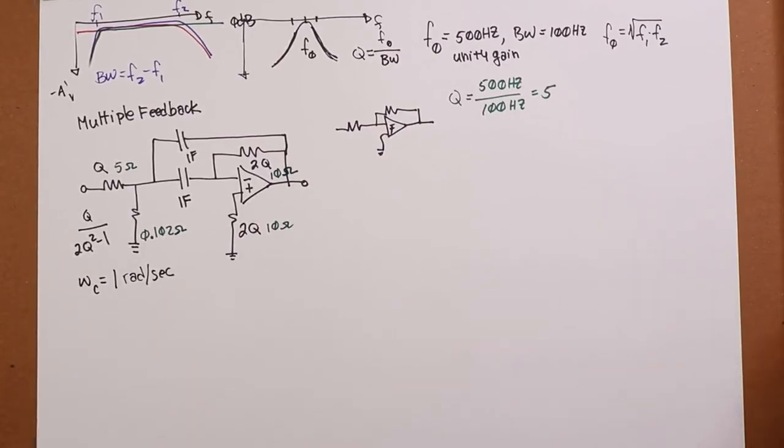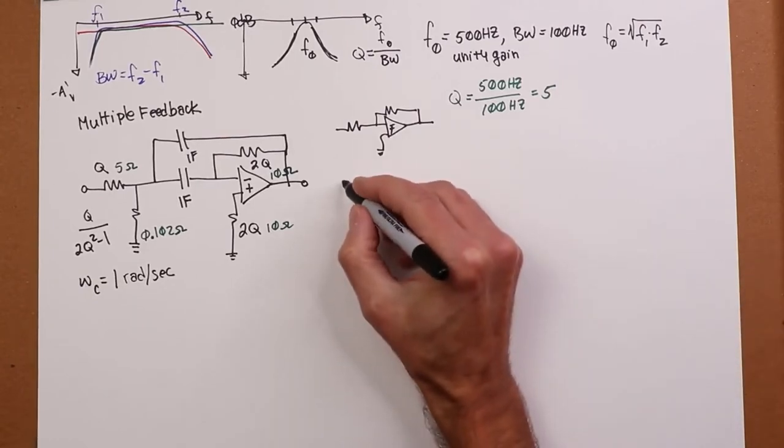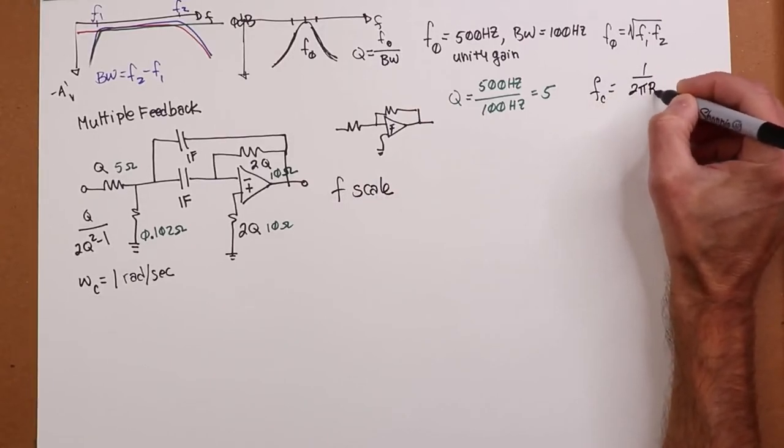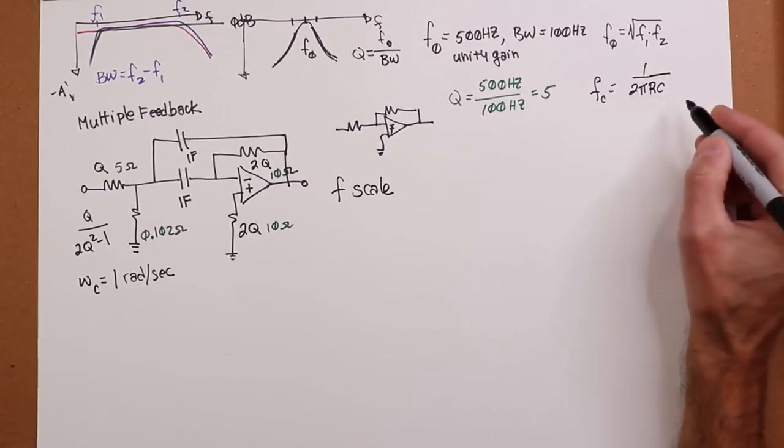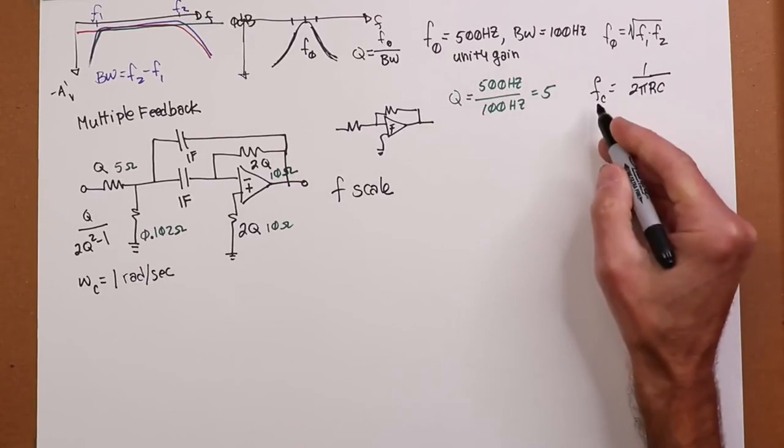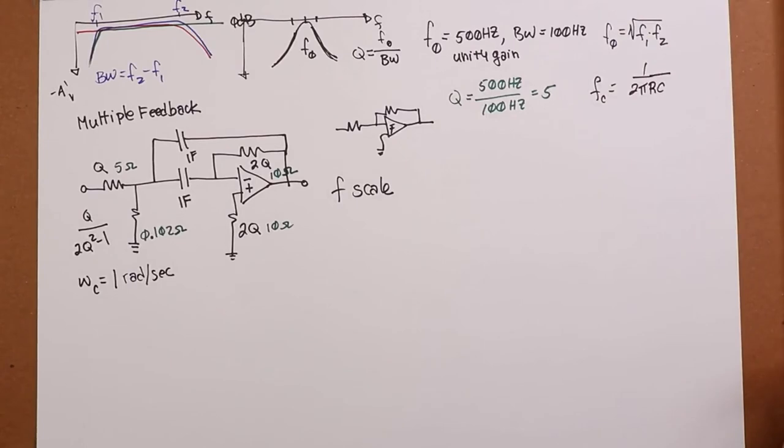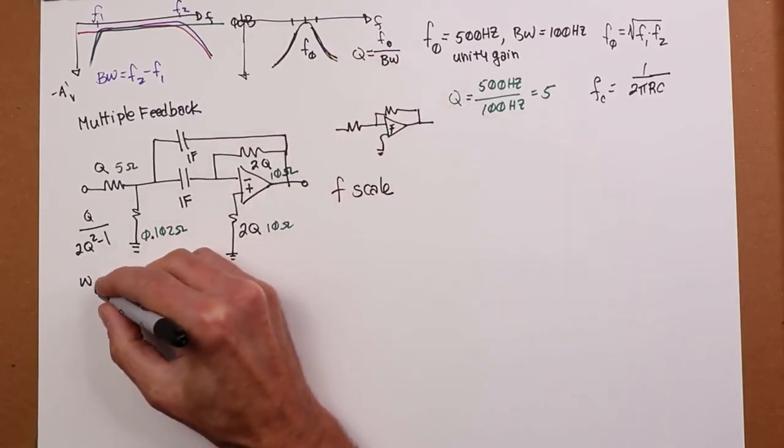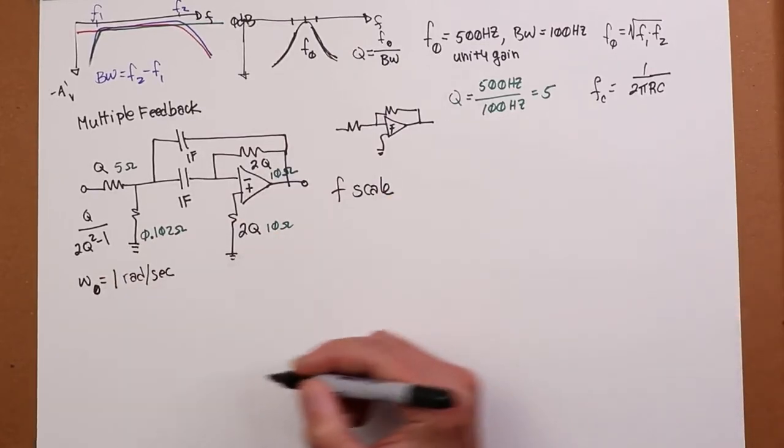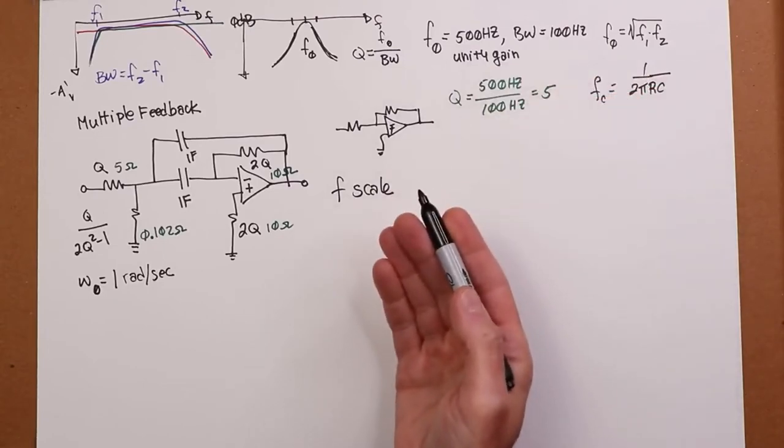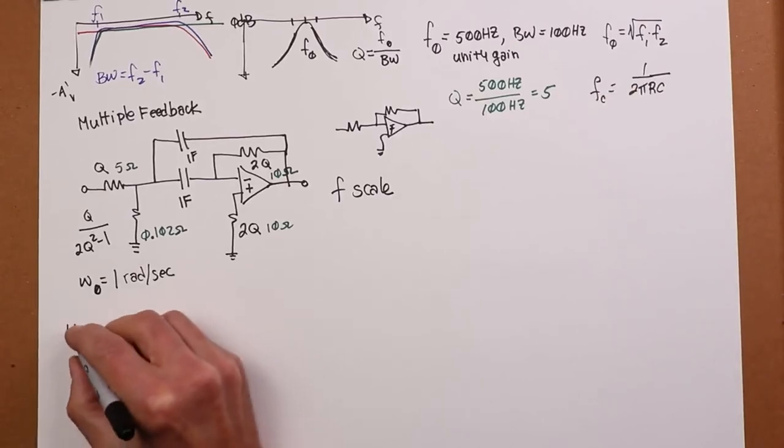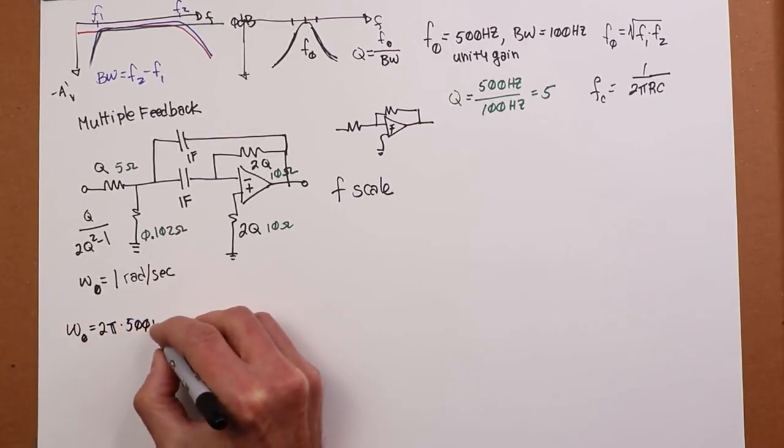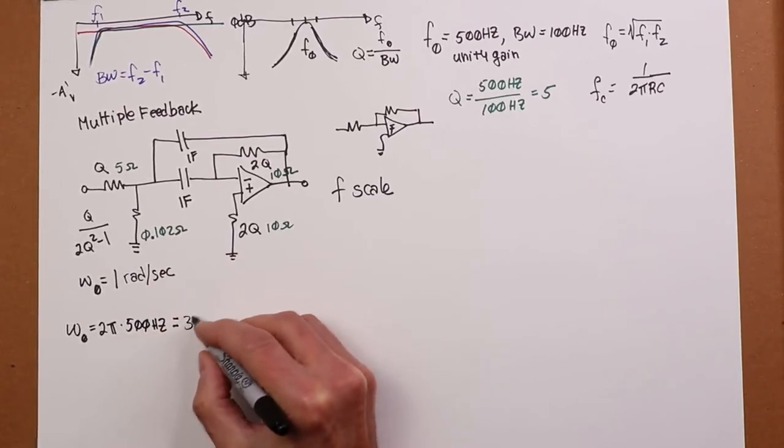So this green version essentially is a one radian per second center frequency with a Q of 5. So just as we did before, we have to do a frequency scale. And remember how we do that. Critical frequency is 1 over 2 pi rc. So we pick either r or c. We drive that down by an appropriate factor to drive fc up by that same factor. So what is the factor that we need?